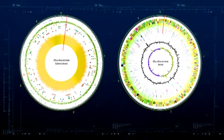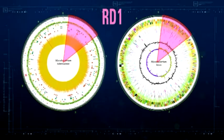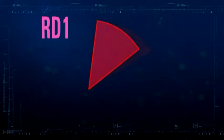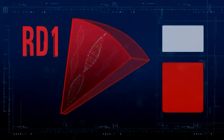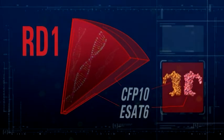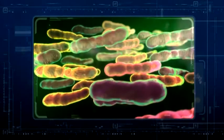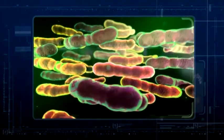The genome of the mycobacteria contains specific region RD1. In the region, pathogenic mycobacteria encode the synthesis of specific proteins, CFP10 and ESAT6, which are produced as a result of active mycobacterial proliferation in the human organism and define their virulent properties.